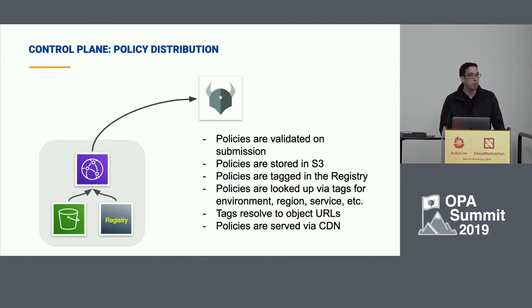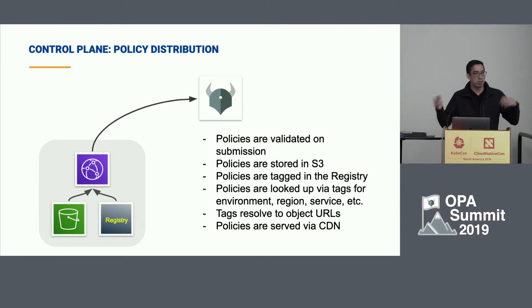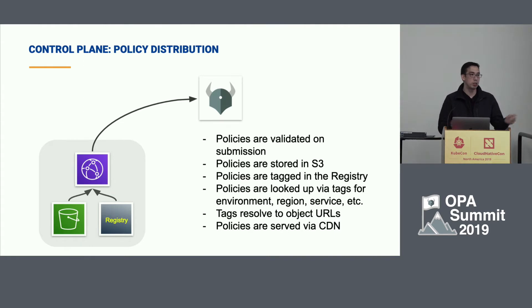We also tag our policies. Our deployments go across multiple environments — dev, staging, and prod — and different AWS regions like US East, US West, et cetera. We target our policies to go to different deployments for different locations for a service, kind of like using labels in Kubernetes to target deployments.